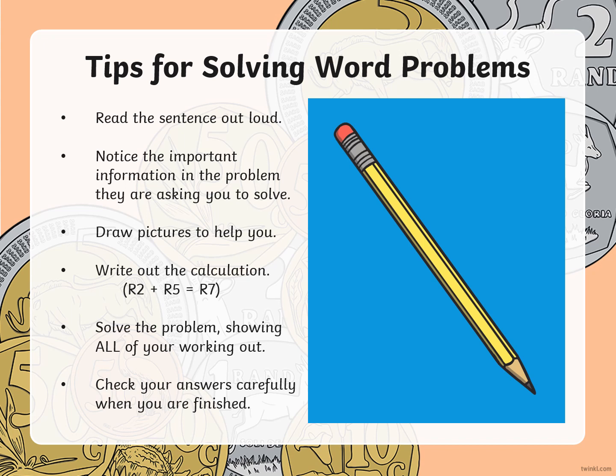Tips for solving word problems. Read each sentence out loud, slowly and carefully. Notice the important information in the problem they are asking you to solve. Draw pictures to help you understand. Write the calculation out in full — for example, 2 rand plus 5 rand is 7 rand. Solve the problem showing all of your working out. And lastly, check your answers carefully when you are finished.